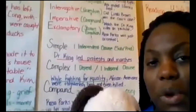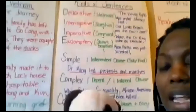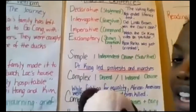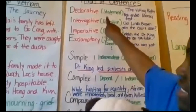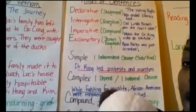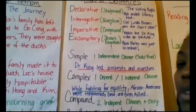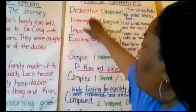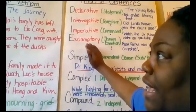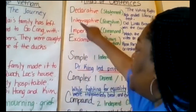Good morning everyone. We're going to do a quick lesson today on the different kinds of sentences. We're going to look at the four basic kinds of sentences that you learned in second grade, and a good acronym for that is the word DIIE.